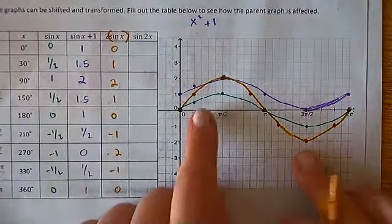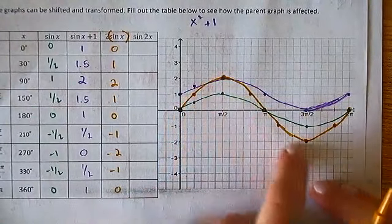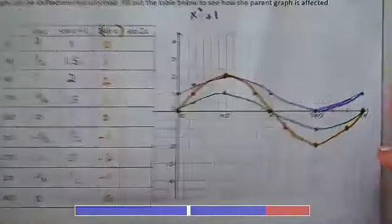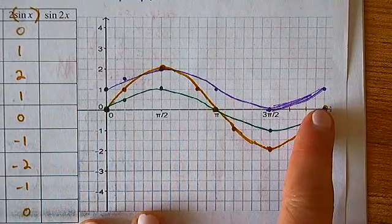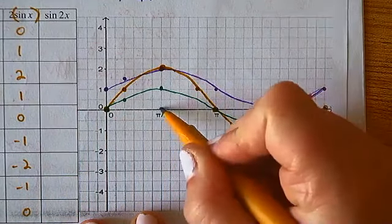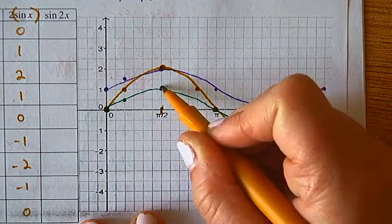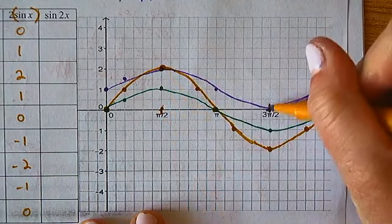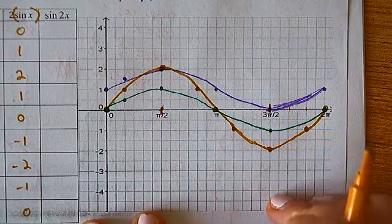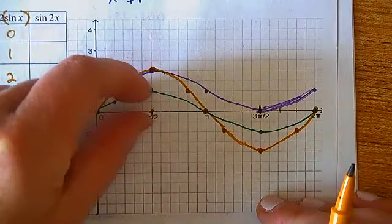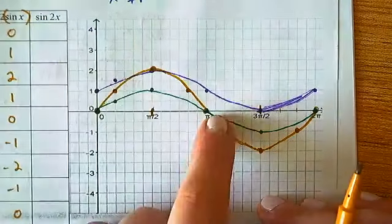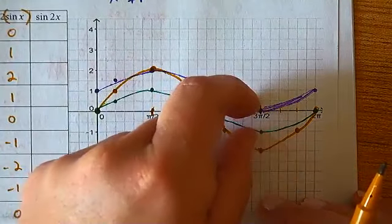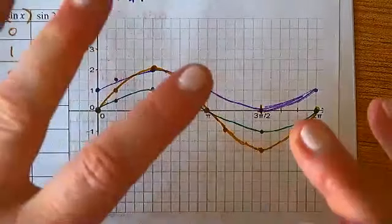Comparing the green parent to this yellow-gold graph: they still cross the x-axis at the same points, but instead of going up one, we went up two; and at three pi over two, instead of going down one, we went down two. By multiplying the whole parent by two, it doubled the peak and valley height — the peaks and valleys doubled in size. That number in front is called the amplitude.